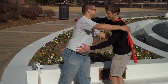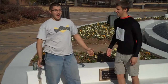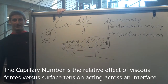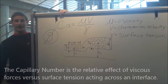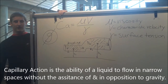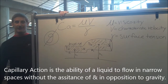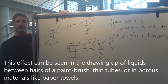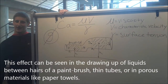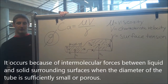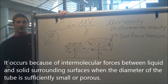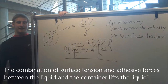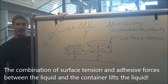Thank you, Capillary Man. How did you know to do that? That's simple. The capillary number is the relative effect of viscous forces versus surface tension acting across an interface. Capillary action is the ability of a liquid to flow in narrow spaces without the assistance of, and in opposition to, gravity. This effect can be seen in the drawing up of liquids between hairs of a paintbrush, thin tubes, or in porous materials like paper towels. It occurs because of intermolecular forces between liquid and solid surrounding surfaces when the diameter of the tube is sufficiently small or porous. The combination of surface tension and adhesive forces between the liquid and the container lifts the liquid.